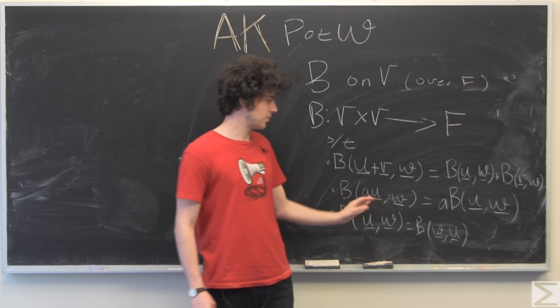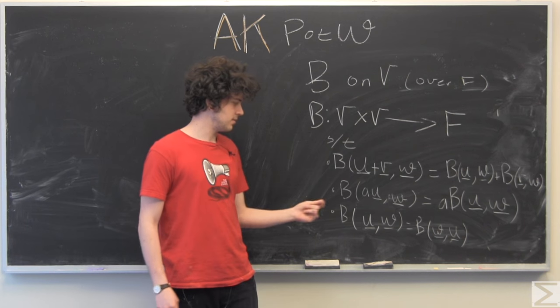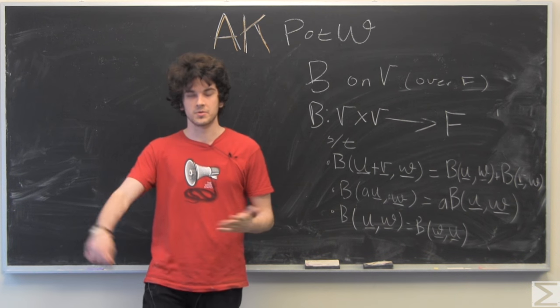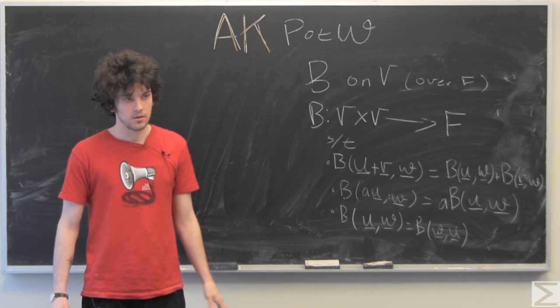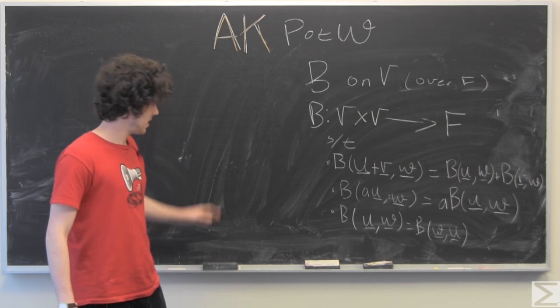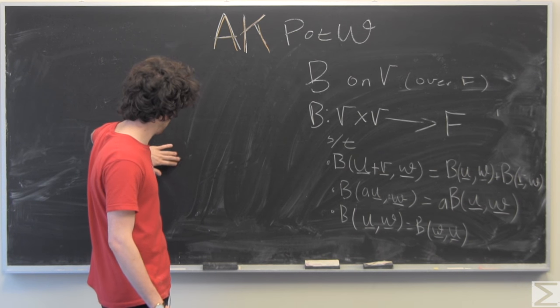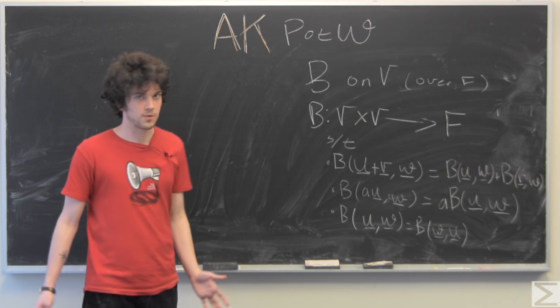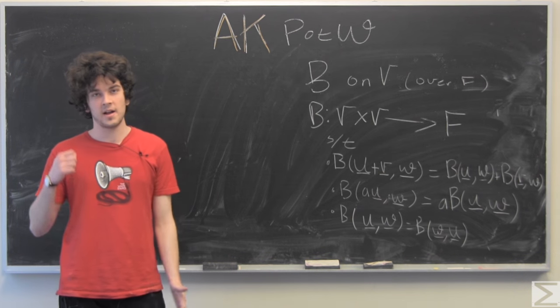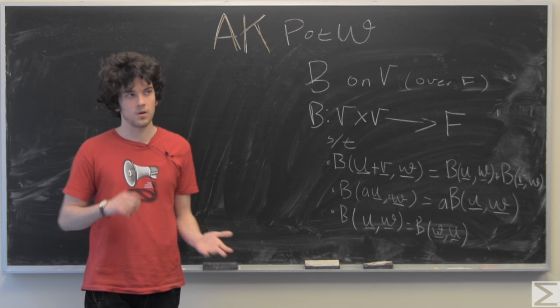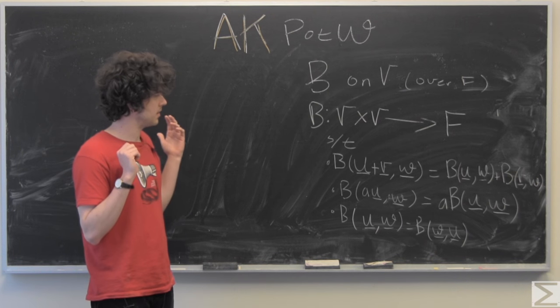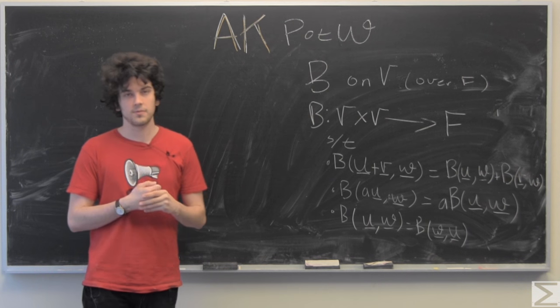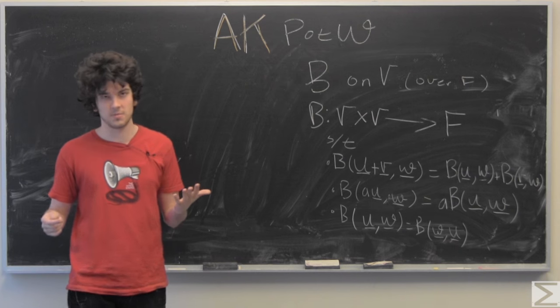We can also pull out scalers and switch our variables around. So the problem is, given a quadratic form of any vector in V, find the bilinear form of any combination of vectors.